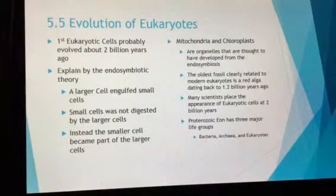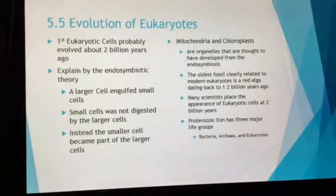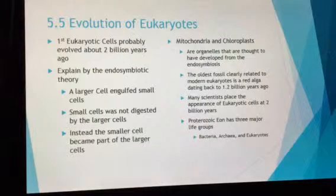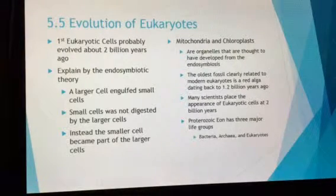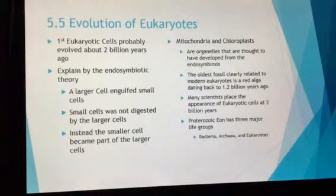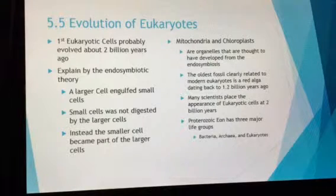Now these eukaryotic organisms are going to have things like organelles which are membrane bound. They're going to have a nucleus. They a lot of times have DNA, and they'll form what we know as symbiotic relationships with other organisms or other cells. The endosymbiotic theory allows us to show the symbiotic relationship between a very large eukaryotic cell and a very small eukaryotic cell.